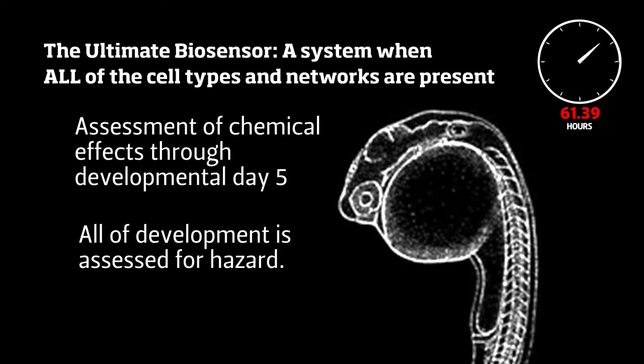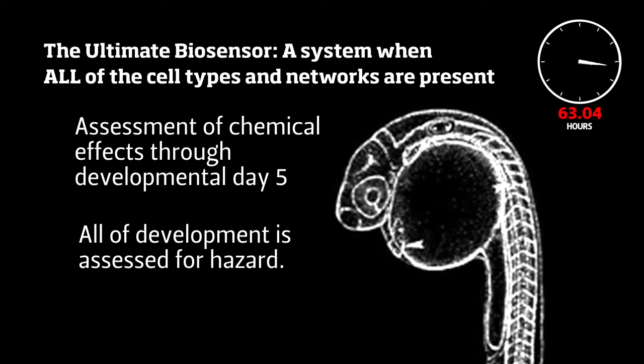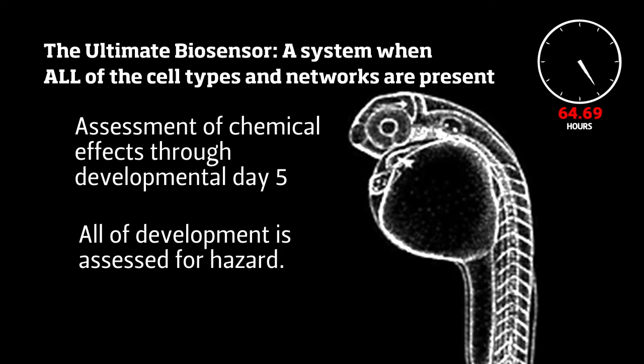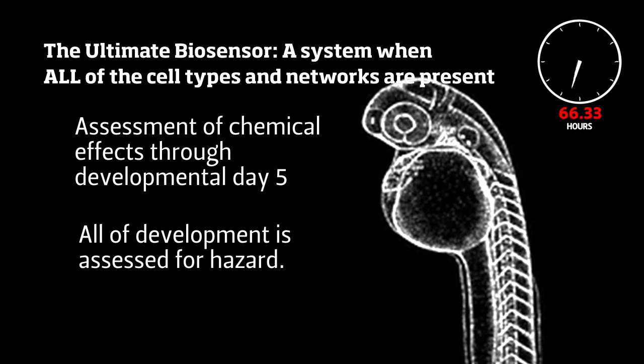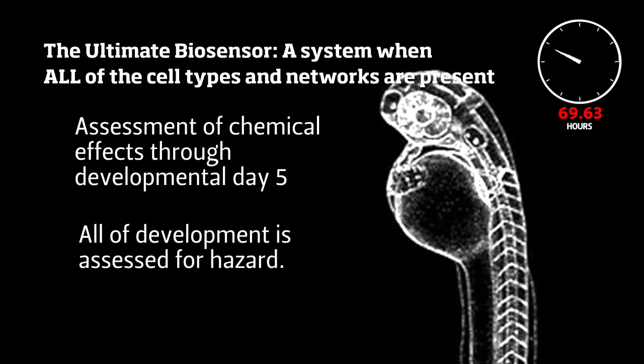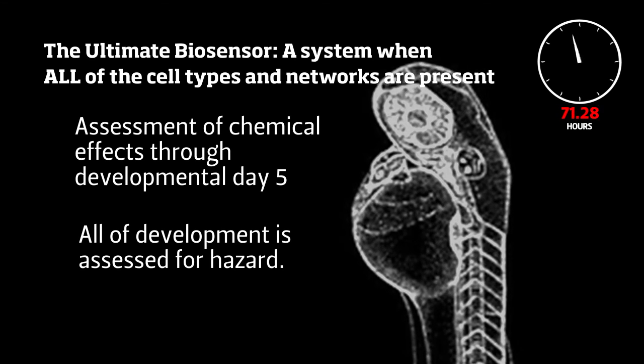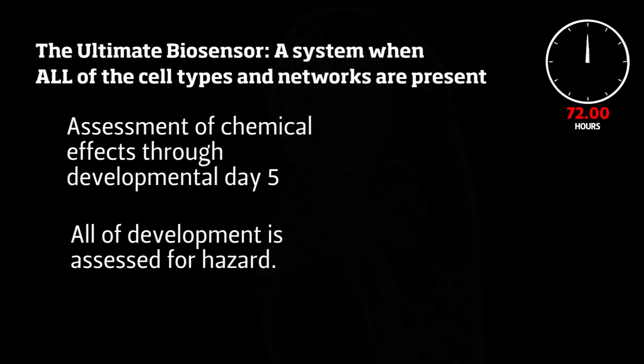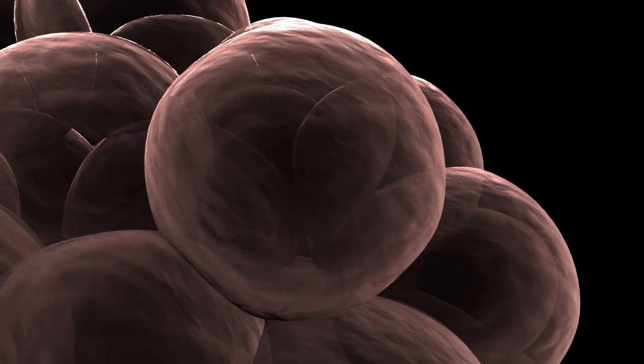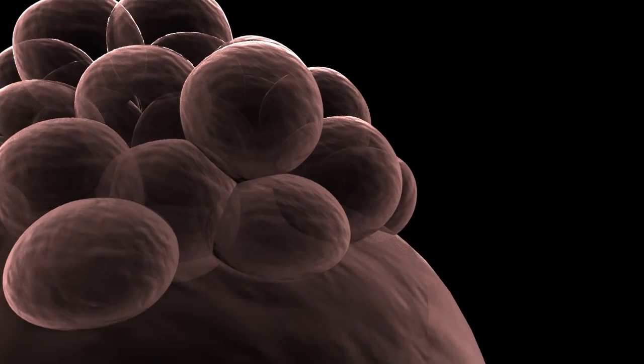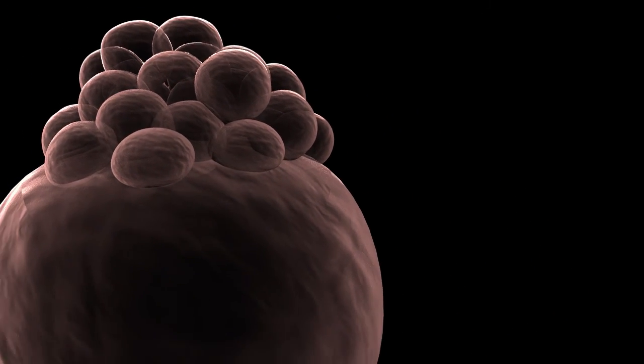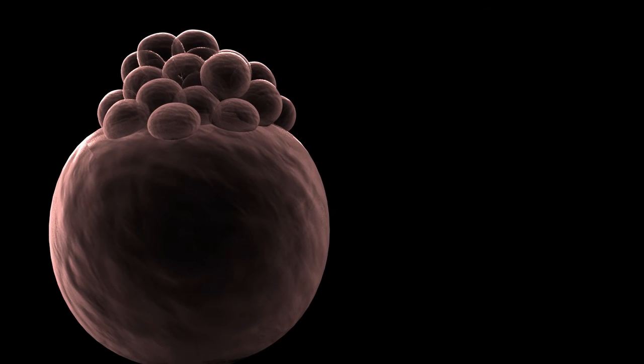These active networks present many potential targets that could potentially be perturbed by a chemical. By assessing developmental outcomes through day five, the zebrafish serves as the ultimate biological sensor of chemical hazard potential. So it's not just one assay in a lab dish, but instead, all cells and networks are simultaneously assessed for hazard using the zebrafish model.